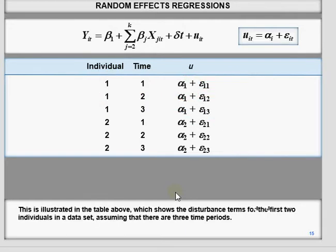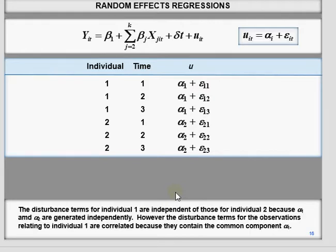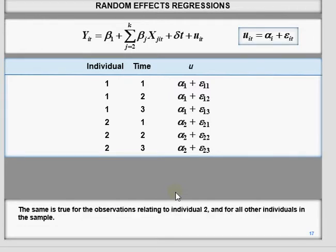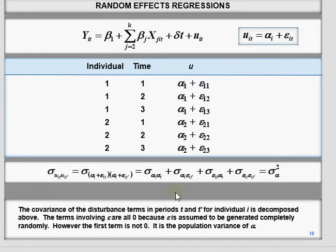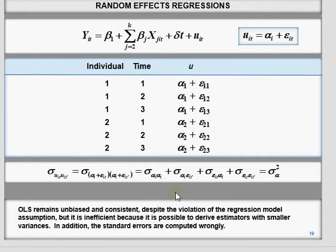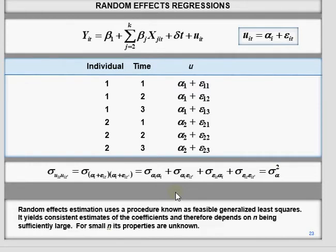To overcome this problem, you need a different estimation technique. That is, you should use feasible generalized least squares (FGLS) instead of OLS. That is basically how we estimate random effect models.